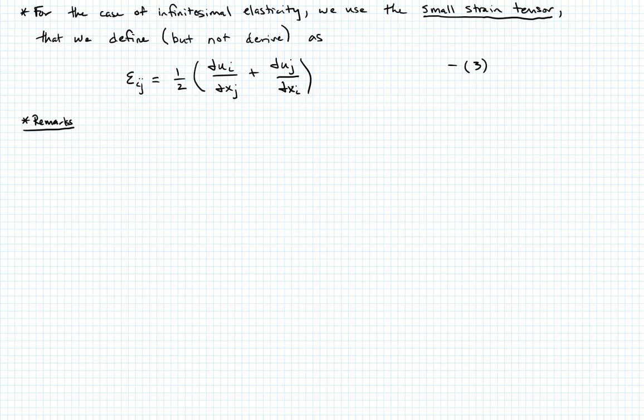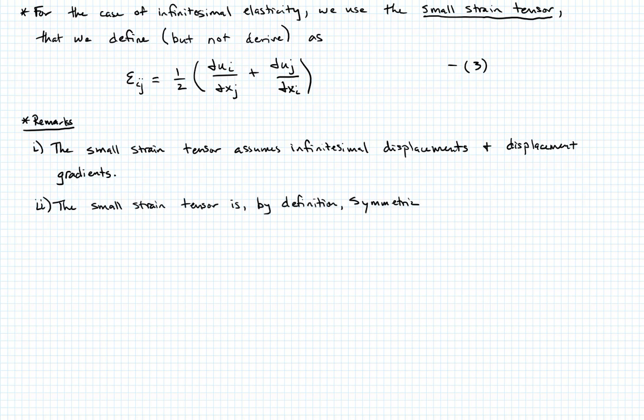Number one, the small strain tensor assumes infinitesimal displacements and infinitesimal displacement gradients. Number two, the small strain tensor is, by definition, symmetric. It's actually the symmetric part of the displacement gradient tensor. And then number three, I want to just show you that it's easy to see that equation three agrees with our intuition, at least regarding the normal strain very well.